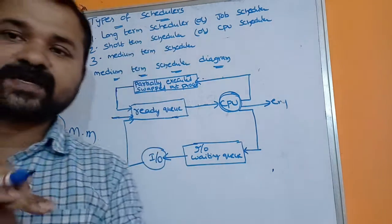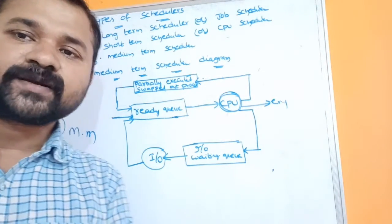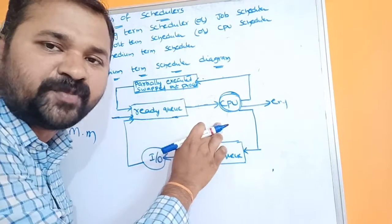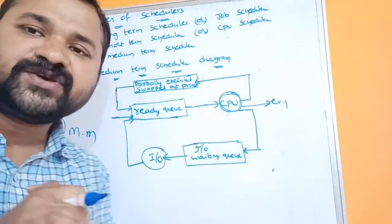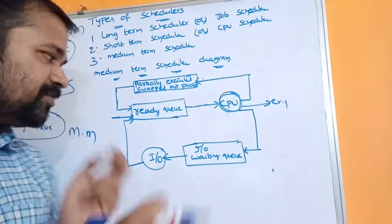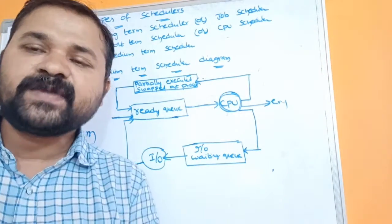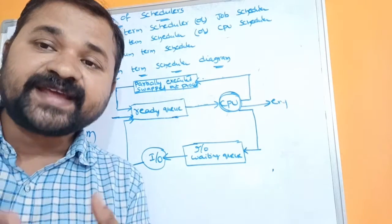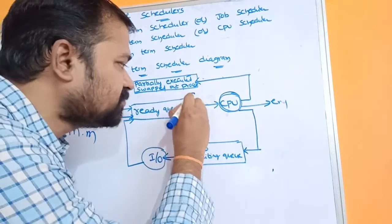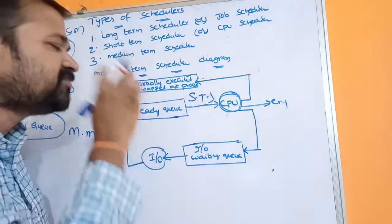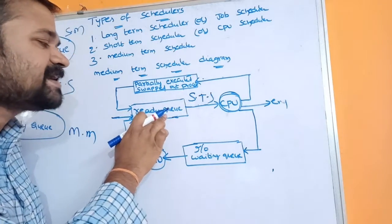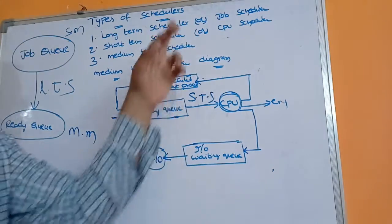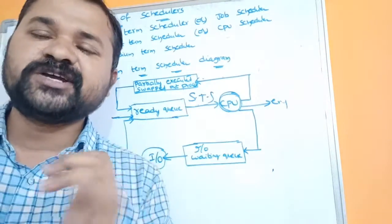Now let's look at the short-term scheduler. The short-term scheduler picks a process from the ready queue and allocates the CPU to that process, so the CPU starts execution of that process. The ready queue is present in main memory and contains a list of processes ready for execution. The other name for the short-term scheduler is the CPU scheduler.